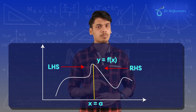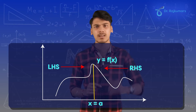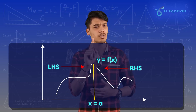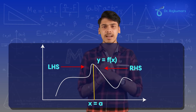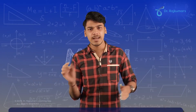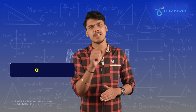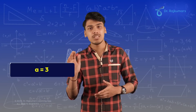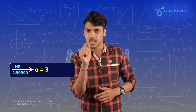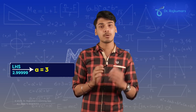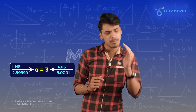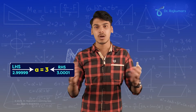If you are not able to approach the point, it means there is some cut in the curve, and therefore the curve is discontinuous. One more thing to note is that approaching from the left-hand side and right-hand side does not mean from the farthest point. For example, if a = 3, when approaching from the left-hand side you approach from maybe 2.99999, and when approaching from the right-hand side you approach from 3.0001 coming back to 3 again.